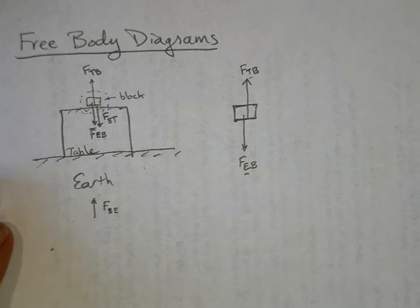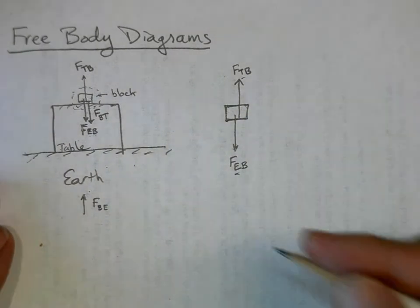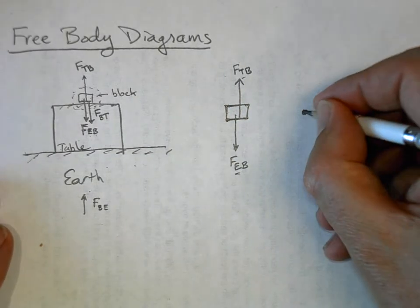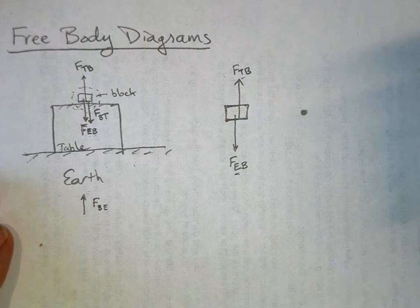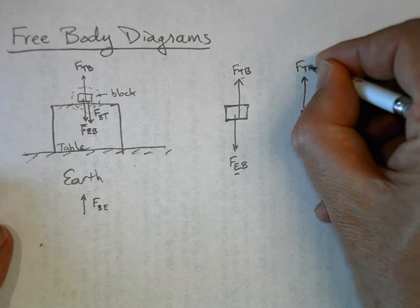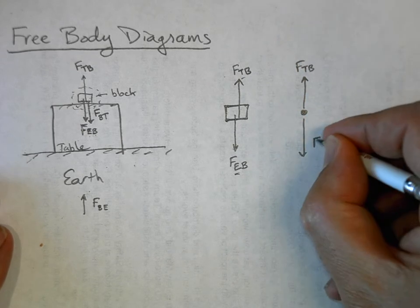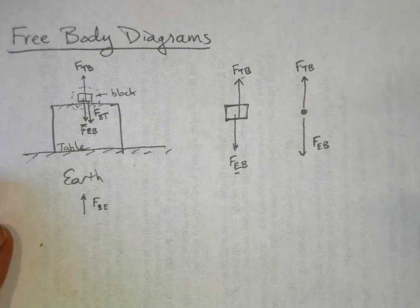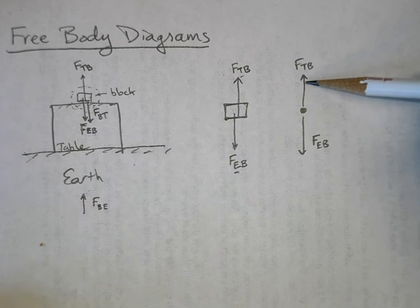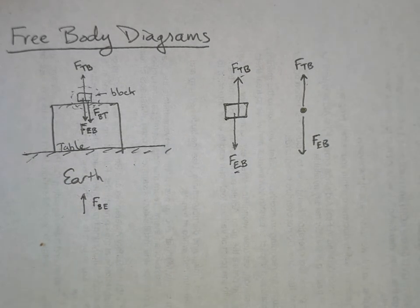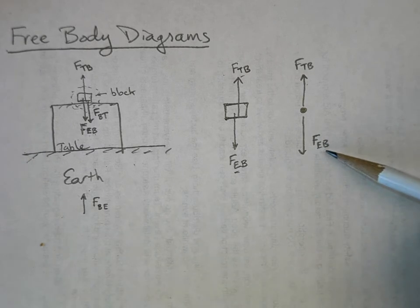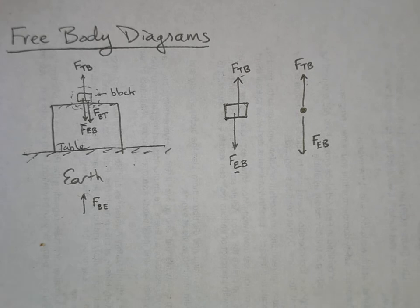The book takes it one more step further with what we call the particle model. I'm going to treat this block as if it has no extent to it — maybe it has mass — and treat it like a point in space or a dot, and draw the forces. This is the force of the table on the block, and this is the force of the earth on the block. I'm not drawing a free body diagram of the table, so I don't show the block's force on the table. I'm not drawing a free body diagram of the earth, so I don't show the force of the block on the earth. These are the forces that I show to draw a free body diagram.